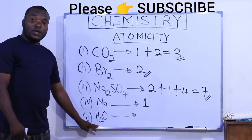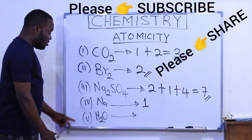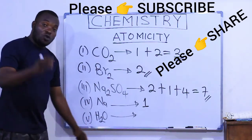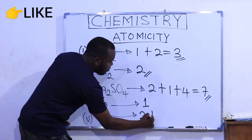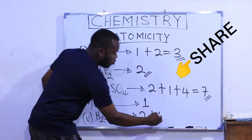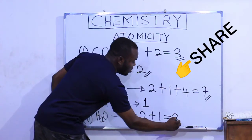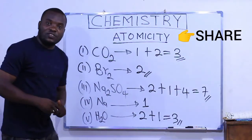And finally, we are asked to find the atomicity of water, H2O. As you can see, a molecule of water, one molecule of water, contains two atoms of hydrogen plus one atom of oxygen. So the total atoms in water gives us three. So the atomicity of water is three. And that's the answer.